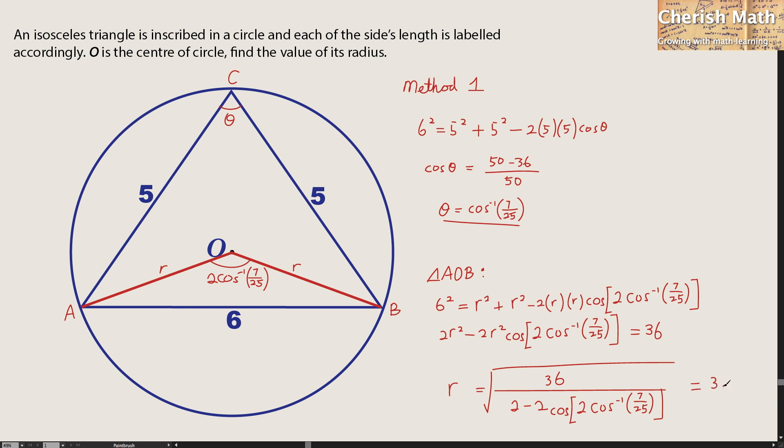And the answer that I'm getting here from the calculator is 3.125 units for the radius. That's the answer for this question.